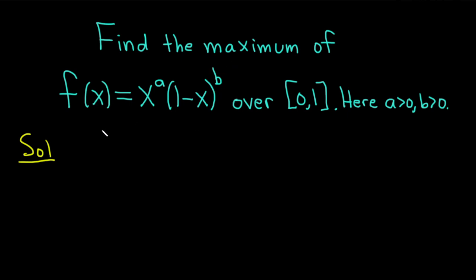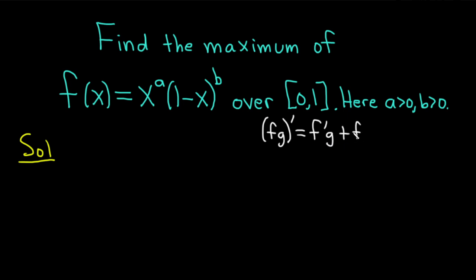We're going to start by finding the critical numbers, so let's take the derivative. To do that, we're going to use the product rule. The product rule says if you have two functions f and g and you want the derivative of that product, it's the derivative of the first times the second, plus the first times the derivative of the second. We're going to apply it here to this problem.